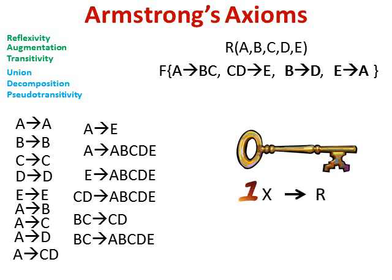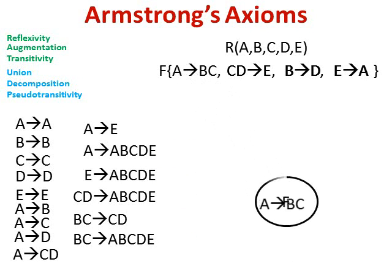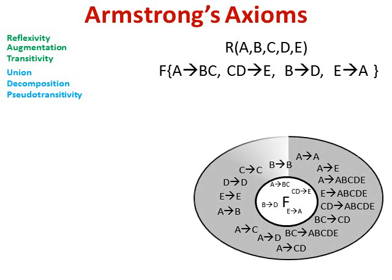A key must determine everything about all the attributes in our relation. We can say that A, E, CD, and BC are candidate keys for relation R. But a key must also be minimal — it must be the minimal set of attributes that tells us everything about the records in our relation. That leaves us with A and E as the best candidate keys. That's how Armstrong's axioms allow us to use a set of given dependencies to logically imply all functional dependencies inside F closure, helping us find the best candidate keys and eliminating the impractical trial-and-error approach.